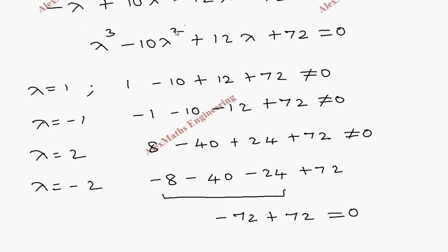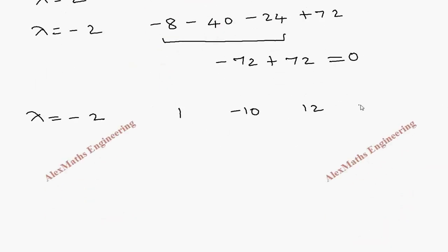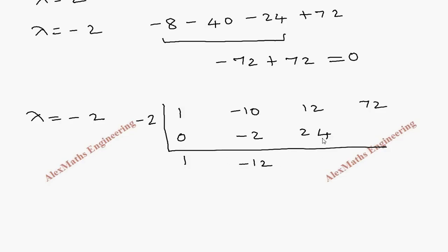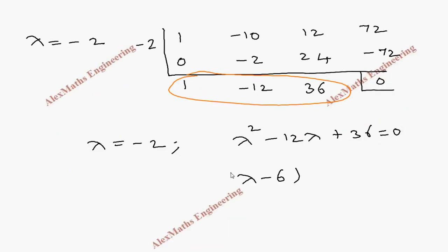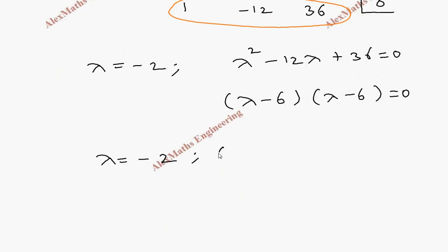Using synthetic division with lambda equals minus 2 and coefficients 1, minus 10, 12, 72: multiplying and adding gives 24, then 36, then minus 72, giving remainder 0. The remaining quadratic factor is lambda squared minus 12 lambda plus 36 equals 0. Factoring: (lambda minus 6)(lambda minus 6) equals 0. So the three eigenvalues are lambda equals minus 2, 6, and 6.